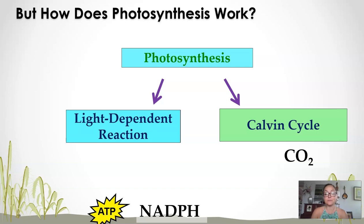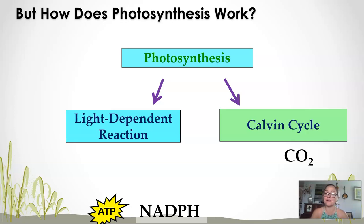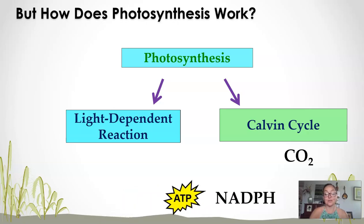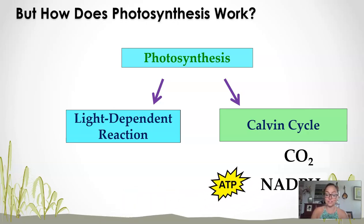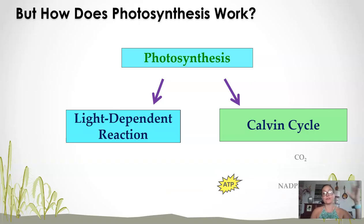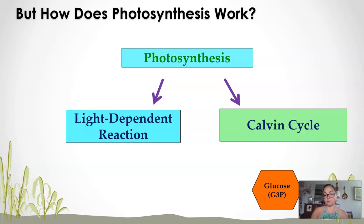In the Calvin-Benson cycle, the plant or the chloroplast is able to build macromolecules — organic molecules — from air, from carbon dioxide. But in order to build bonds, you have to invest energy, and that energy is cellular energy in the form of ATP and NADPH. So you need the light reaction first in order for the Calvin-Benson cycle to occur, to make glucose or G3P.